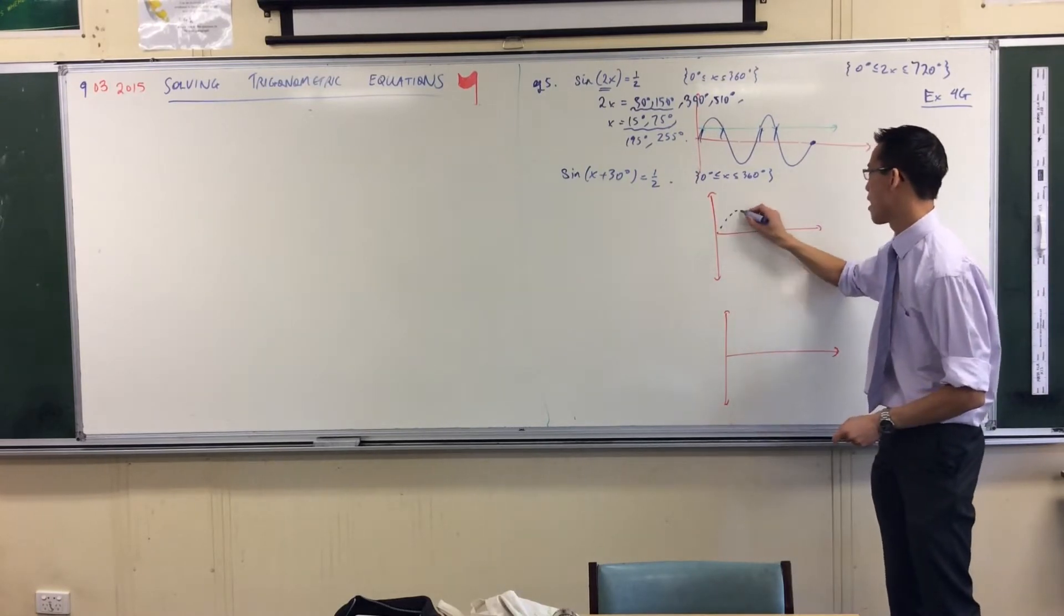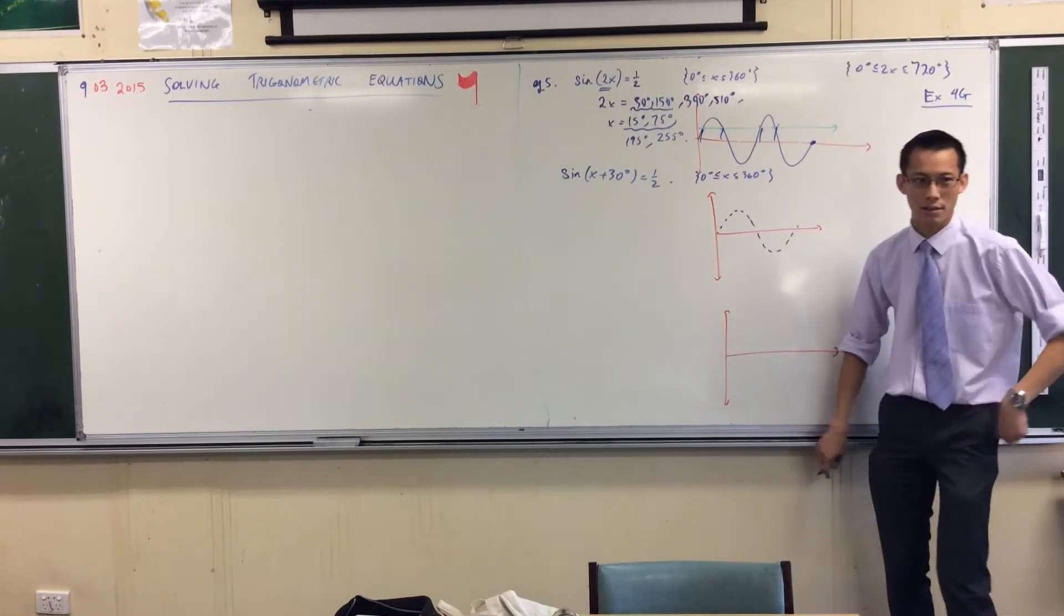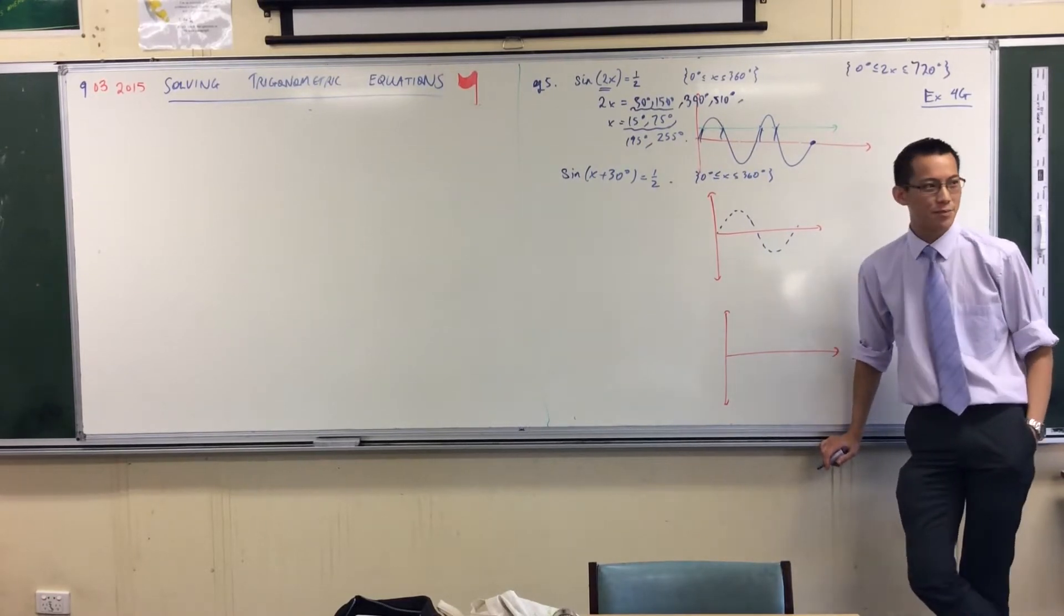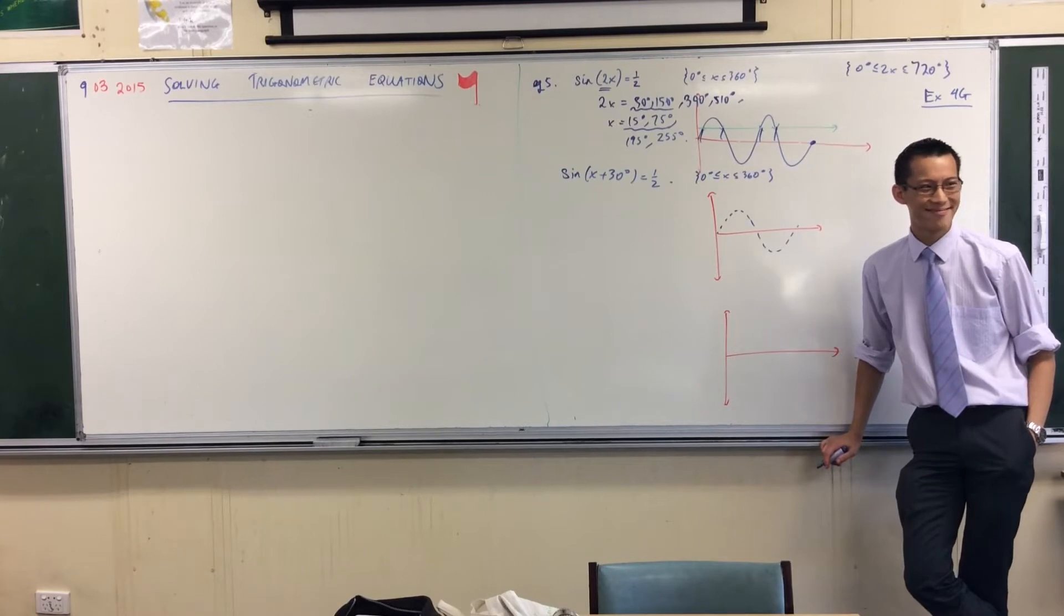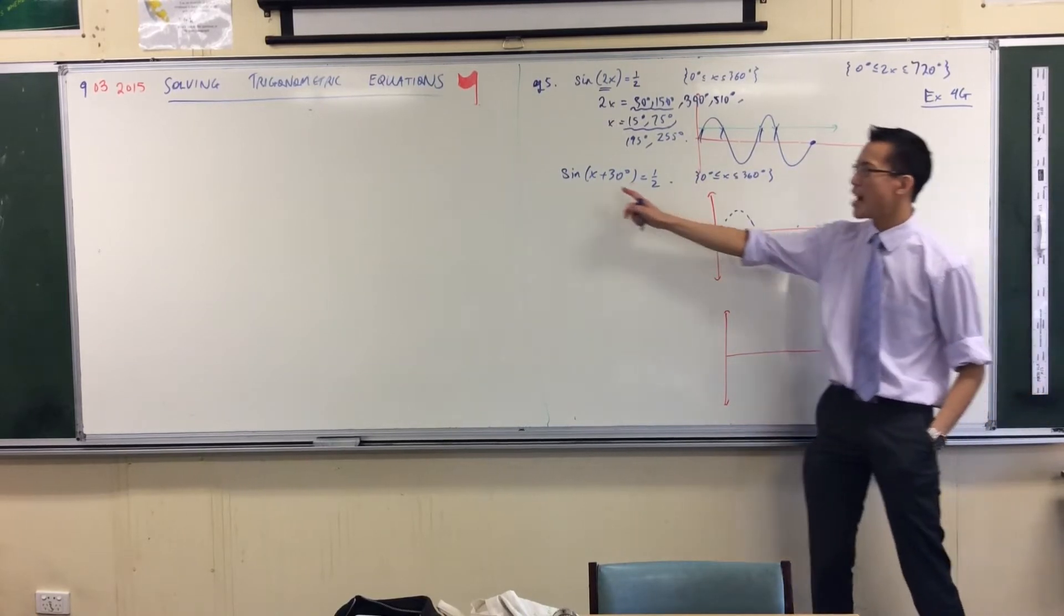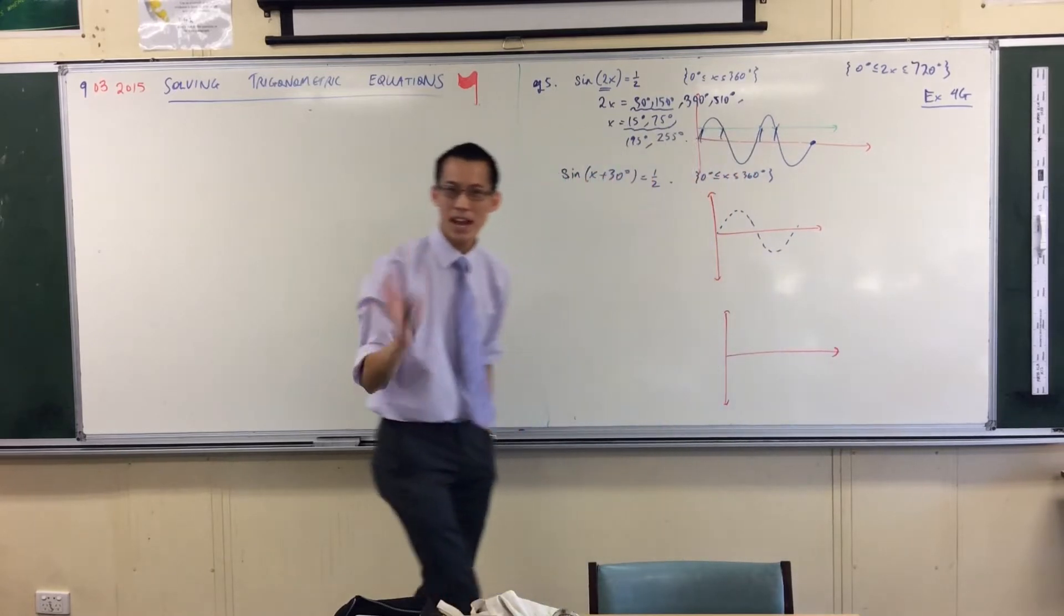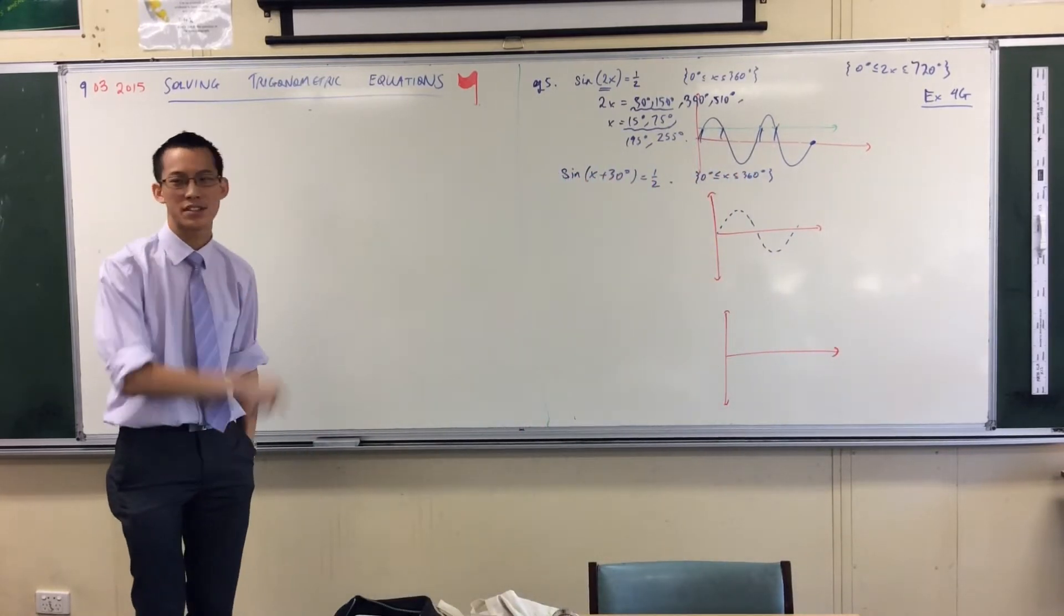Okay so here's regular sine x. It's dotted because it's not the real graph I'm interested in. Now if I have sine of not x but sine of x plus 30, what difference does that make?